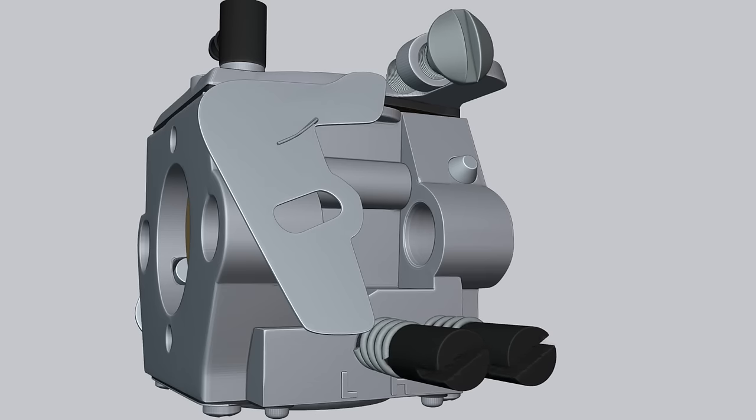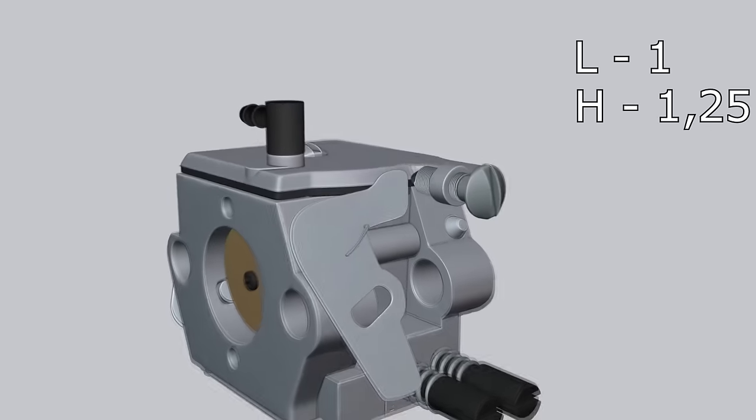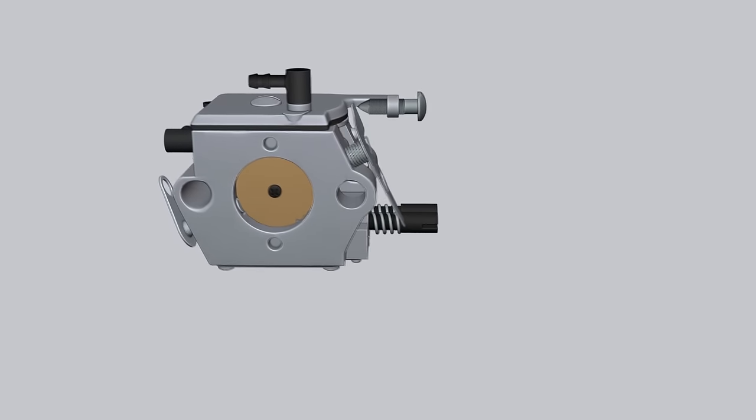By default, the adjusting screws L and H should be backed out one and a half turns from tightening. Personally, in my Chinese chainsaw from the store, the setting was as follows. The screw L was turned out one turn and the screw H was turned out one and a quarter. That's all, thanks for watching, until new videos.